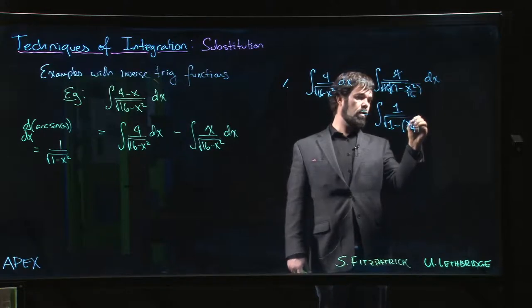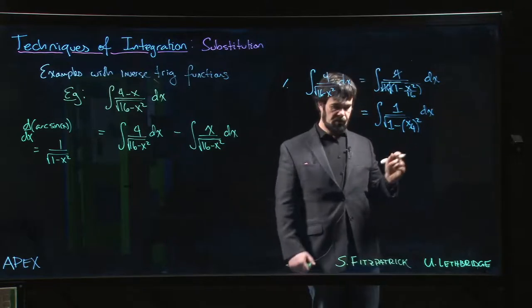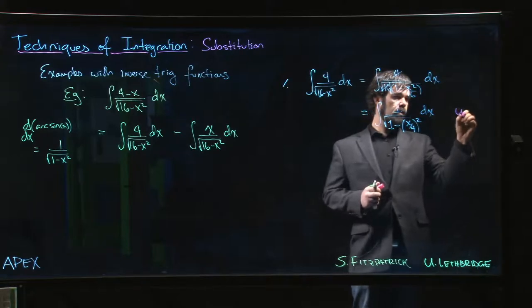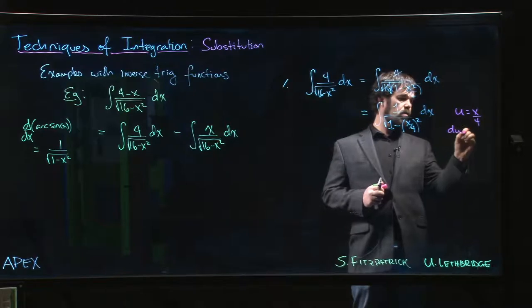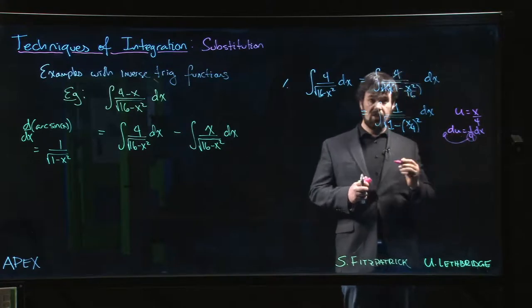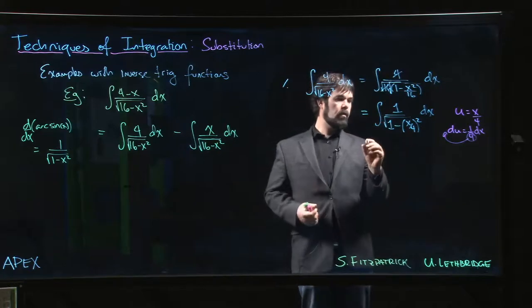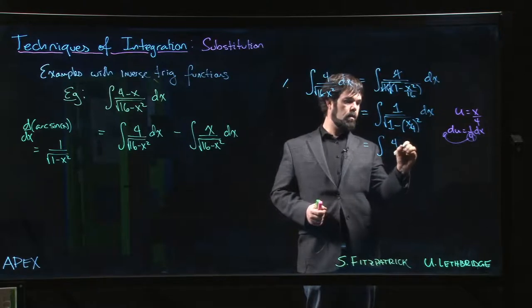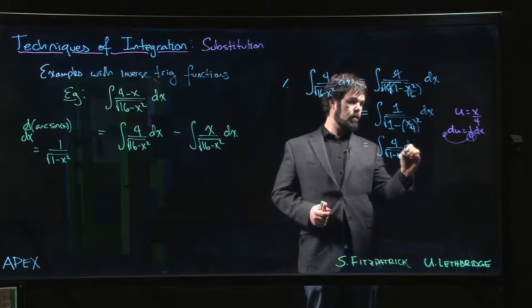So of course that suggests that we want to let u equal to x over 4. So du will be 1 over 4 dx. Bring that 4 up, dx is gonna be 4 times du. And we're gonna get 4 over the square root of 1 minus u squared times du.